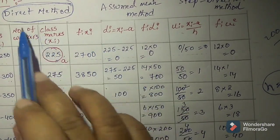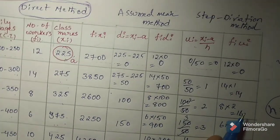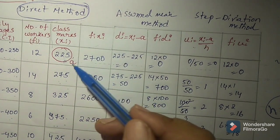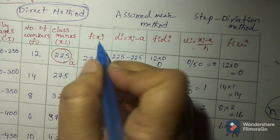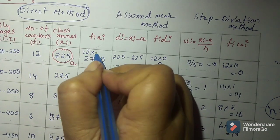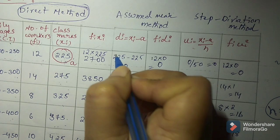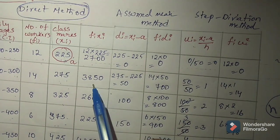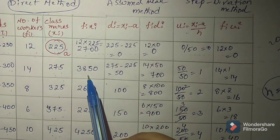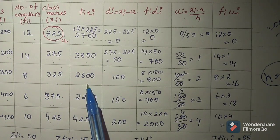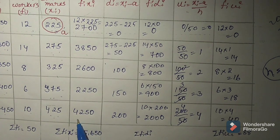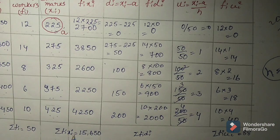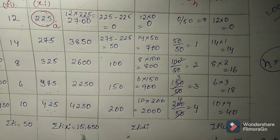For the direct method, find the product of fi and xi. Frequency fi values are 12, 14, 8, 6, 10 and class marks xi are 225, 275, 325, 375, 425. So: 12 into 225 equals 2700; 14 into 275 equals 3850; 8 into 325 equals 2600; 6 into 375 equals 2250; 10 into 425 equals 4250. Adding all these values gives sigma fi xi equals 15650.